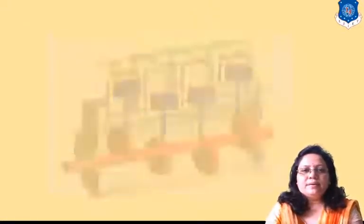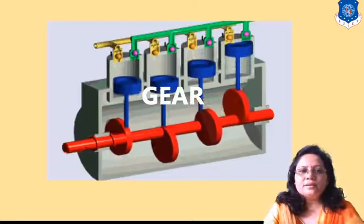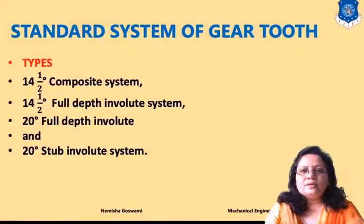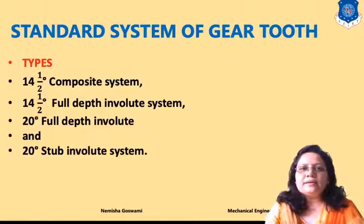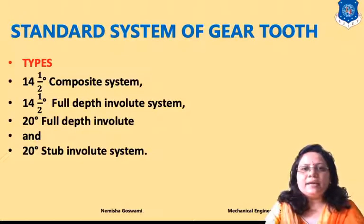Welcome to today's lecture on gears. We will discuss standard gear tooth systems and gear failures. There are basically four standard systems of gear tooth, classified on the basis of pressure angle. The first is the 14 and a half degree composite system, where 14 and a half indicates the pressure angle.